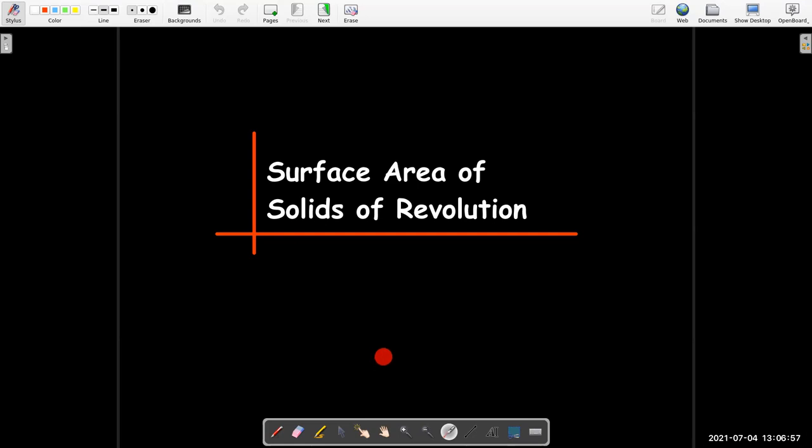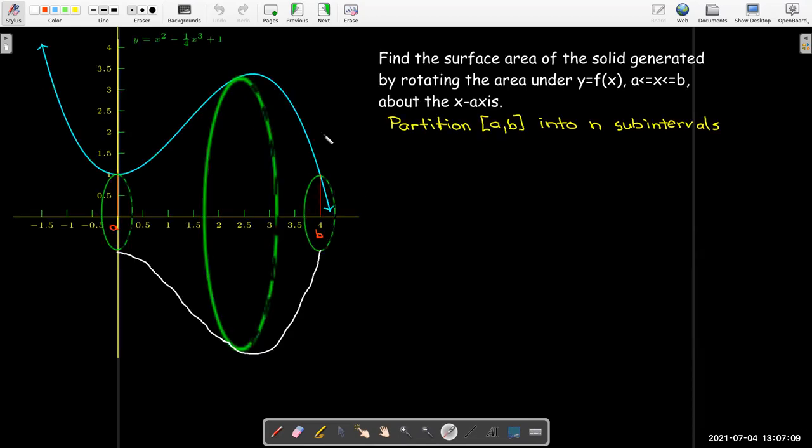In this video, we're going to come up with a formula and technique for calculating the surface area of a solid of revolution. Suppose I have a curve representing a function from x=a to x=b, and I generate a solid by rotating that curve around either the x-axis or the y-axis. Here I've rotated about the x-axis, and I'd like to calculate the area of the surface of that solid.